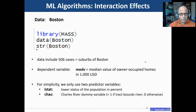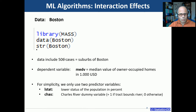The data we will use is the Boston dataset from the mass package in base R, so you don't need to download it from anywhere. Each of the 506 cases represents one suburb of Boston and the dependent variable is median value of owner-occupied homes. For simplicity we only use two predictor variables: the lower status of population in percent, and a Charles River dummy variable.